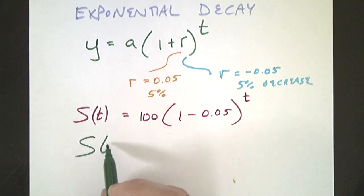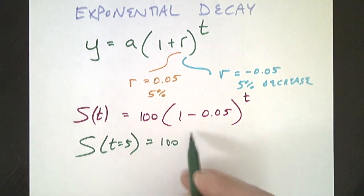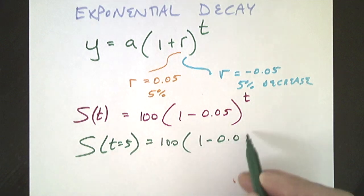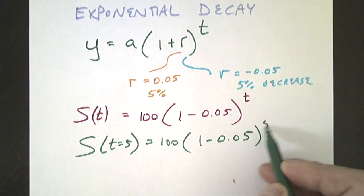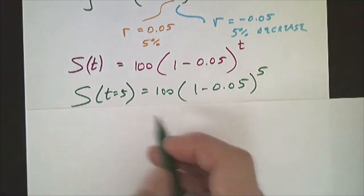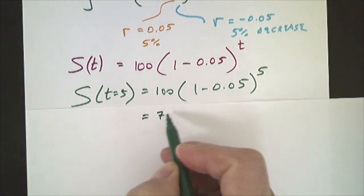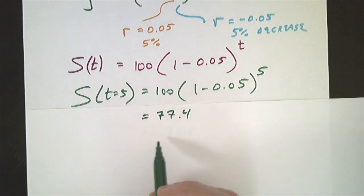So S, your satisfaction, T is equal to five months would be 100, 1 minus 0.05 to the fifth. This works out to be about 77.4. So it would be 77% satisfaction.